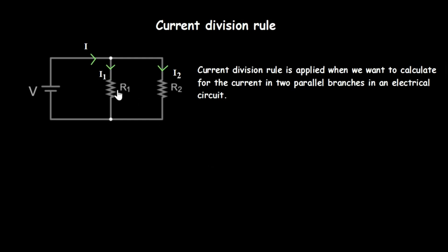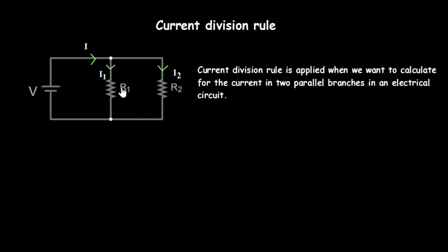Considering this circuit, you can see there are two parallel branches — this branch and this branch — and they both have resistors in them. There is a current coming from the voltage source, labeled i. When this current gets to the node, it splits into i1 and i2 in the two branches.